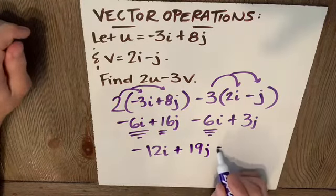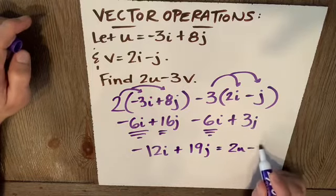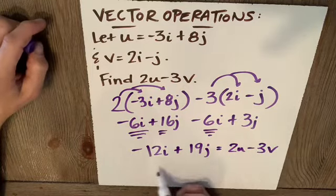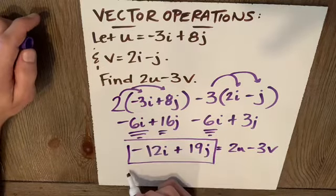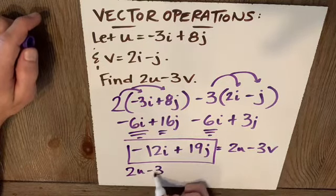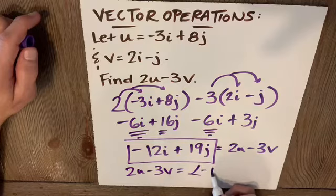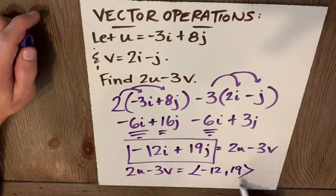There is my vector 2u - 3v. Of course, that's how they wanted it in linear combination form. 2u - 3v would be <-12, 19> in component form. Not a big jump.